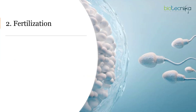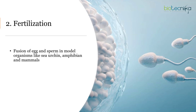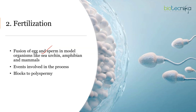The next important topic is fertilization. Gametogenesis is not that important, but you should have a basic idea of different stages and chromosome numbers. For fertilization, you must know the fusion of egg and sperm in model organisms like sea urchin, amphibian, and mammals — and processes like capacitation, acrosomal reaction, and cortical reaction. The sequence of events, what happens after what, and which molecules are involved must be known. For blocks to polyspermy — the slow block and fast block — know the mechanism: in the fast block, depolarization is caused by which ions; in the slow block, which molecule triggers it.